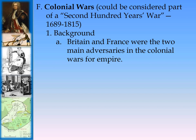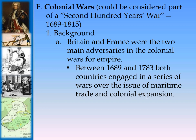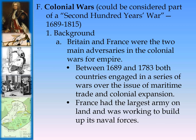Background: Britain and France were the two main adversaries in these colonial wars for empire. Both countries had a long antagonistic relationship. Between 1689 and 1783, they engaged in a series of wars over maritime trade and colonial expansion. France had the largest army on land and was building up its naval forces, and sought to support Spain once Louis XIV's grandson ascended to the Spanish throne.